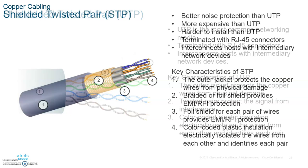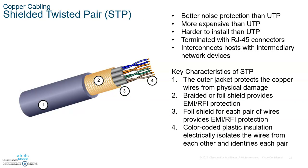The unshielded twisted pair is the most commonly used type. Shielded twisted pair is not used as much because it creates capacitance and shrinks the actual distance. The unshielded twisted pair can give you up to 100 meters, whereas the shielded twisted pair gives you about 25 meters in total.